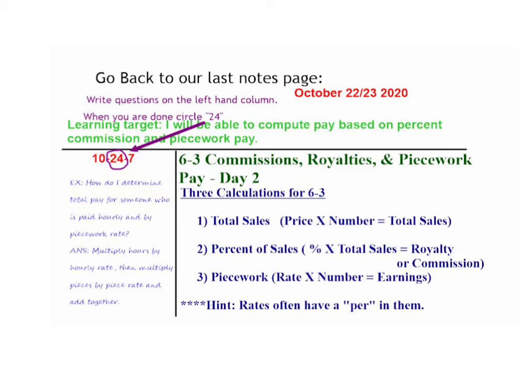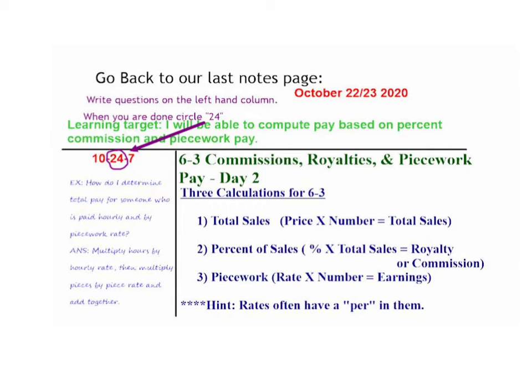When you do that, circle your 24, and you can stop your video at any time and restart it when you're ready. Let's title our next page as follows: 6-5, Social Security and Medicare, Day 1. That's the 27th and 28th of October. Our learning target is: I'll be able to compute a paycheck deduction for Social Security and Medicare.